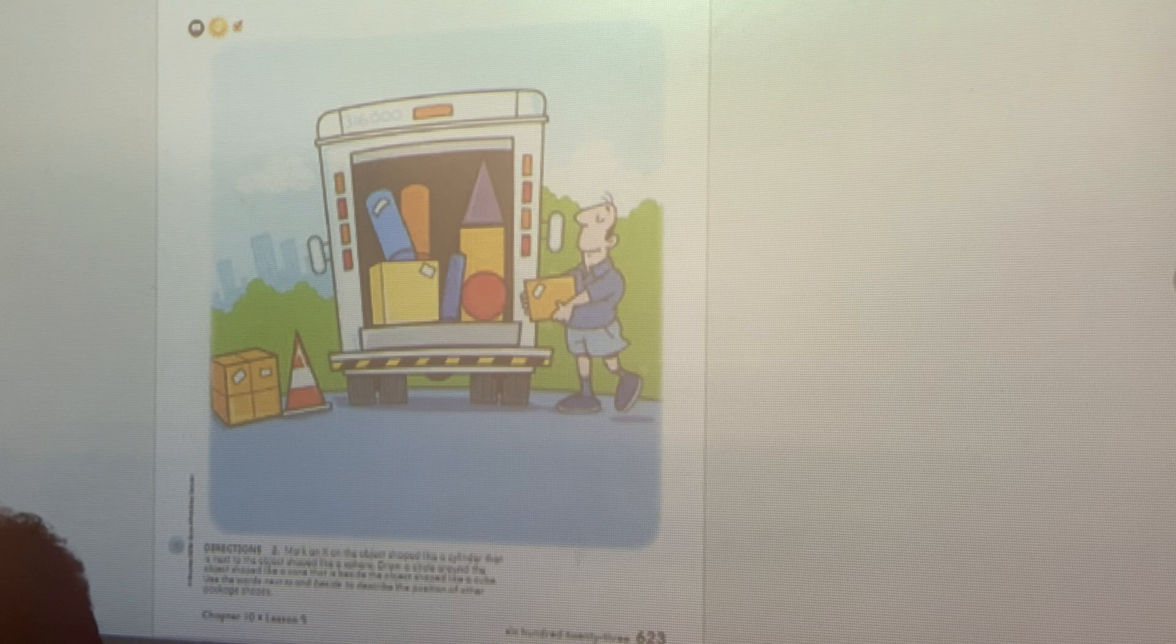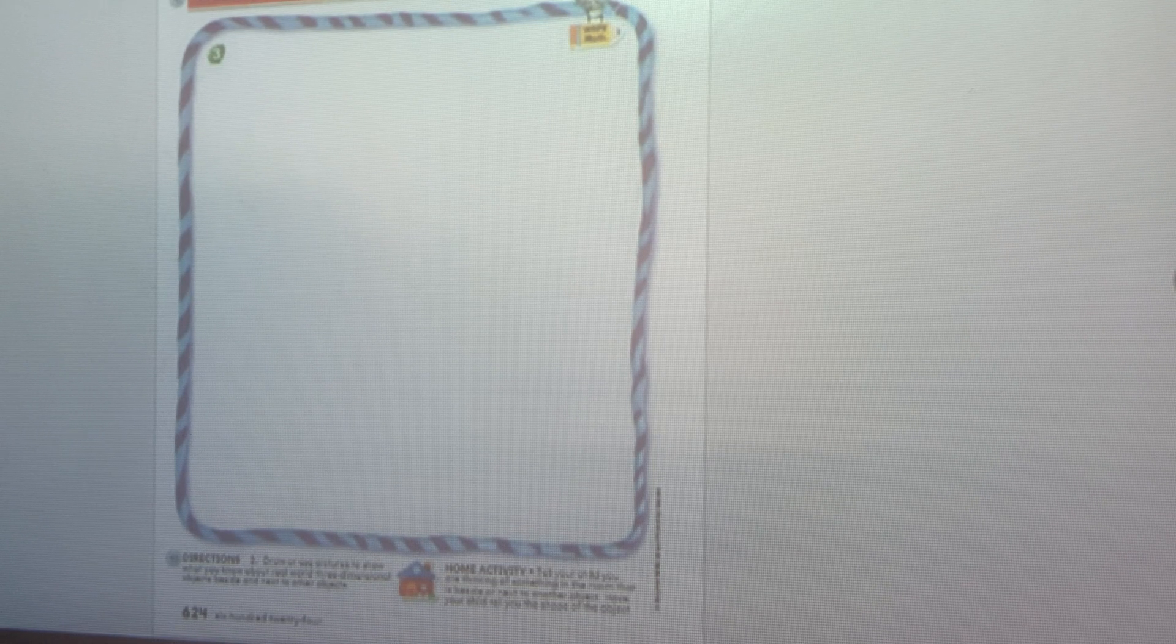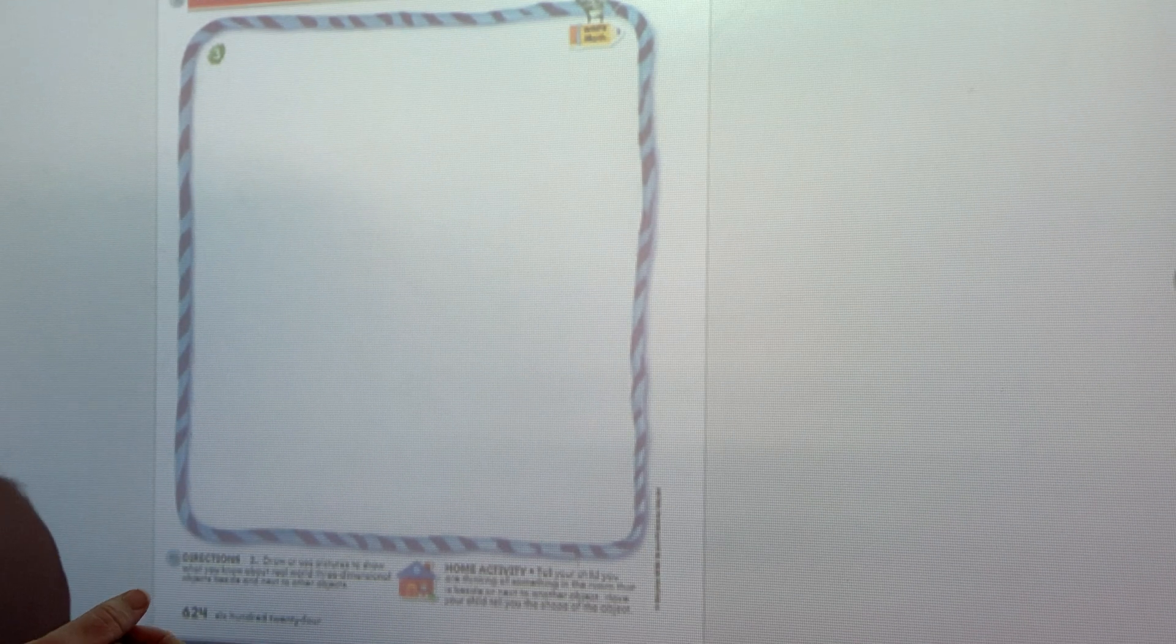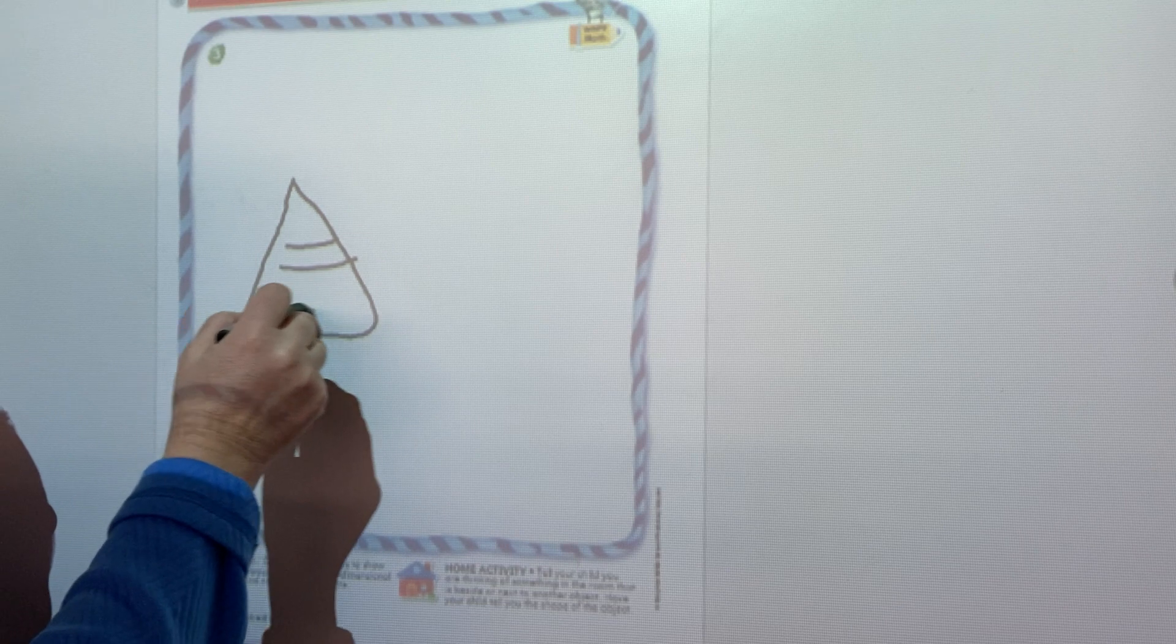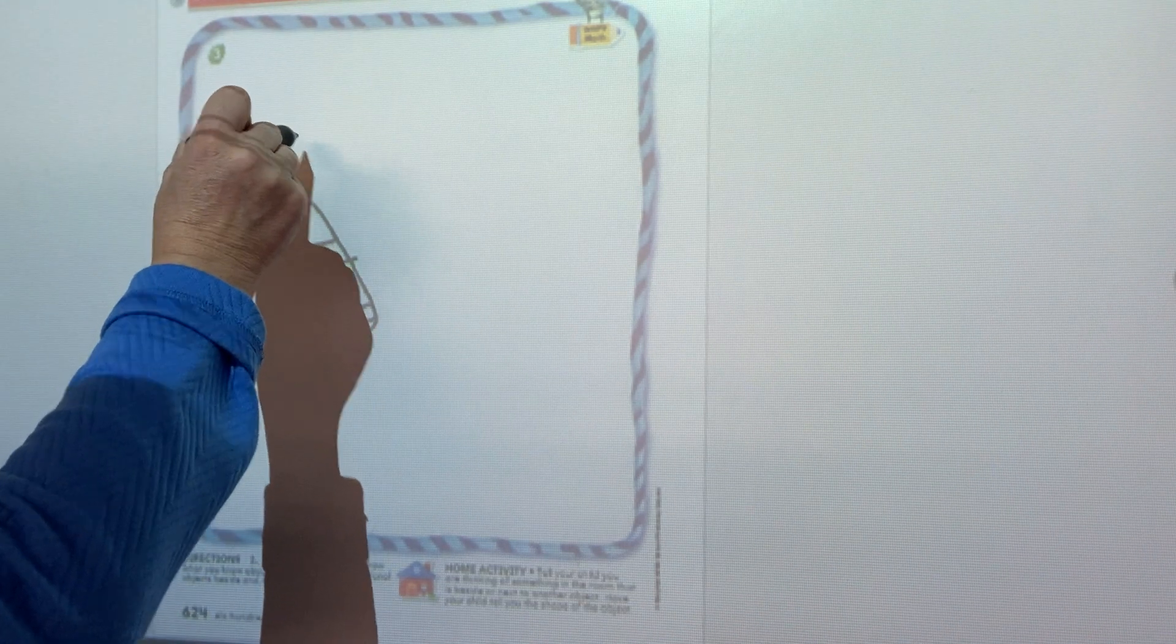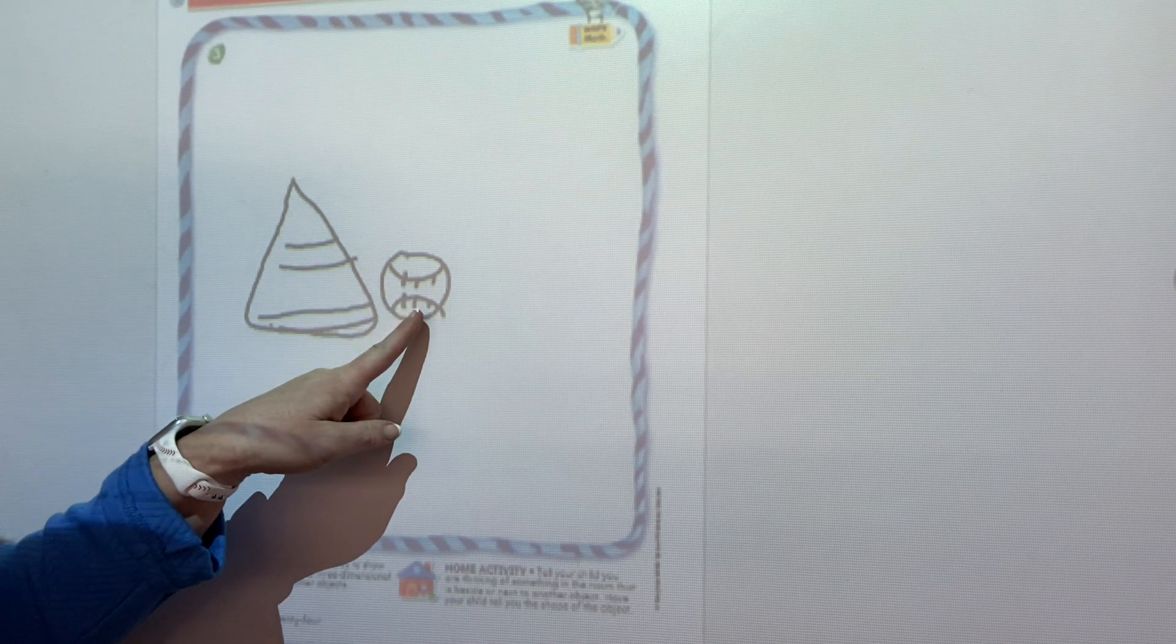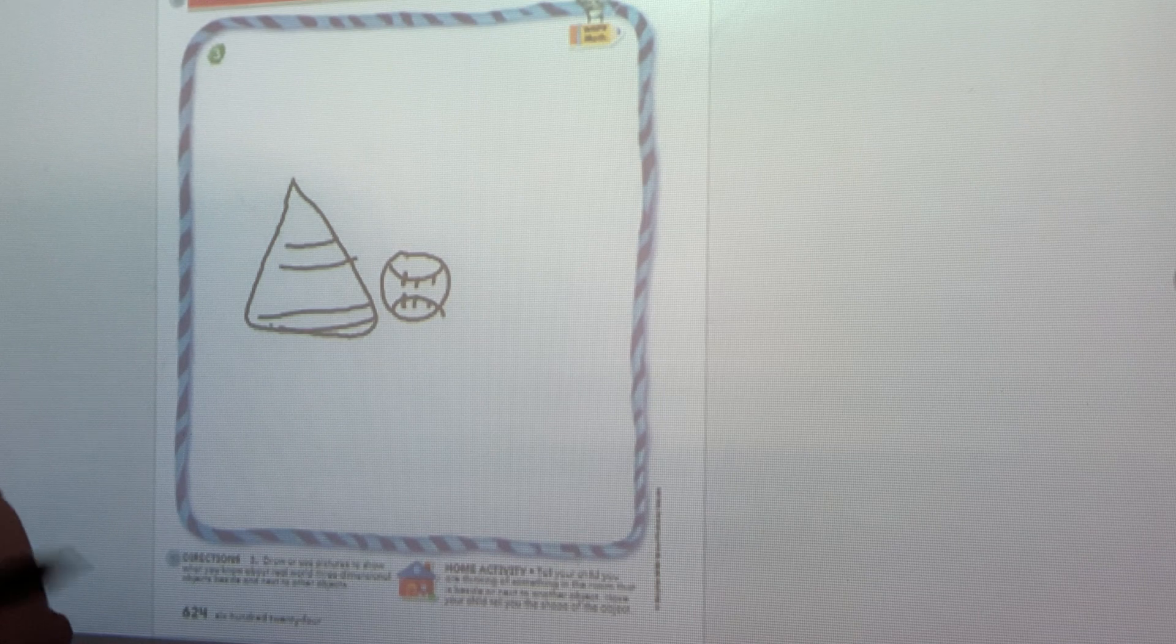On this last page, this is going to be kind of on your own here. You get to show us what you know about 3D shapes and talking about them being beside or next to something. So if you wanted to draw or use pictures to show what you know about real world objects, you might draw a cone here, kind of like the work cones that we saw. And you're welcome to color that in. And what if we put a baseball next to that cone? We could say that the baseball is next to or beside the cone.